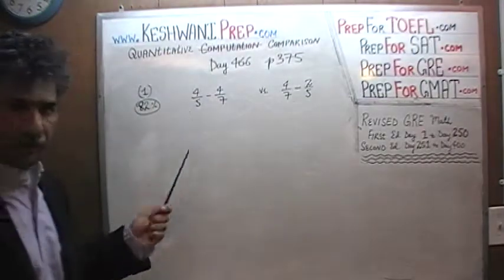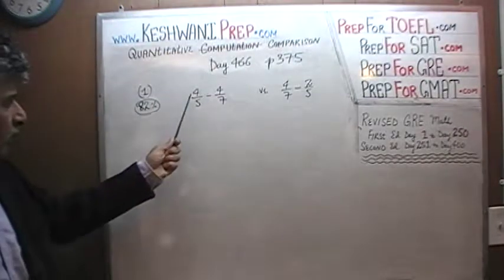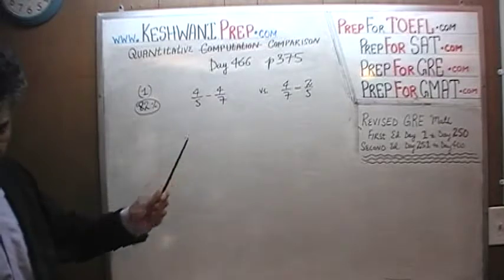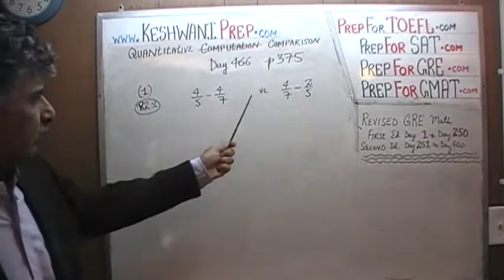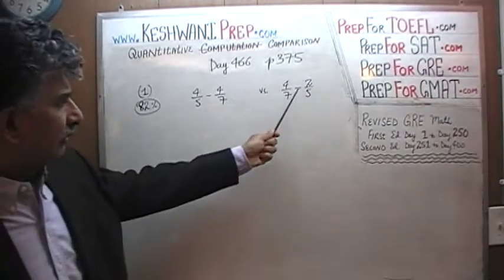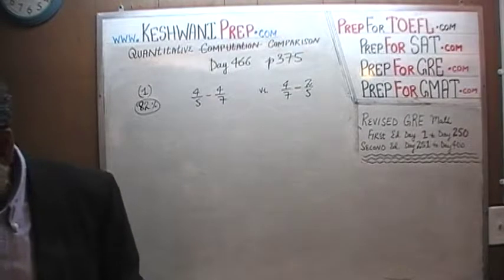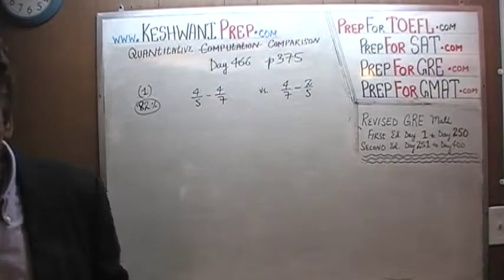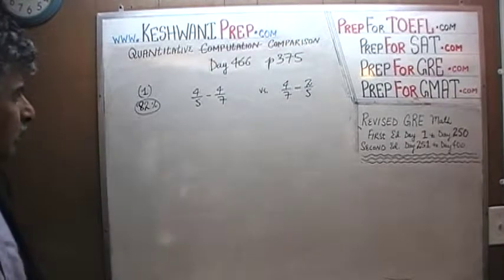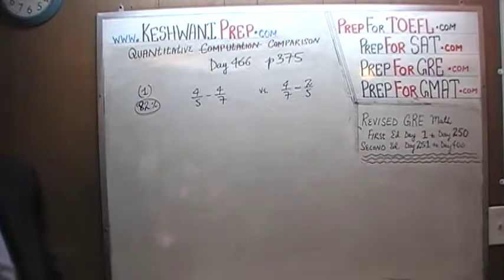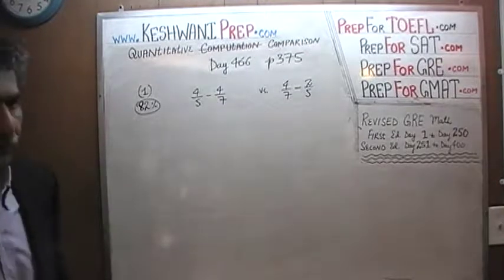We are being asked to compare 4/5 minus 4/7 versus 4/7 minus 2/5. I will give you 5 seconds to pause and then unpause the video — do it yourself.